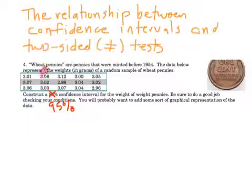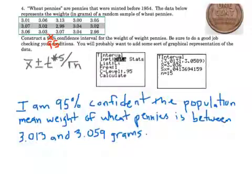This was actually a problem, problem 4 on the chapter 10 practice test. This was a problem not even in chapter 11 when we were doing hypothesis tests, but before that when we were doing confidence intervals. So you may remember it. It talked about wheat pennies, these pennies before they put Lincoln Memorial on the back. Here's the weight of some wheat pennies in grams. The question says construct a 95% confidence interval for the weight of wheat pennies.